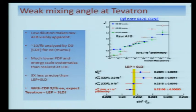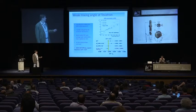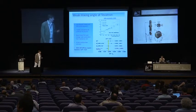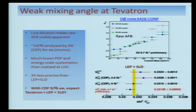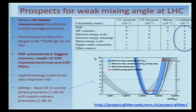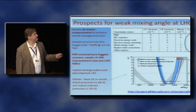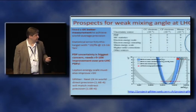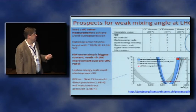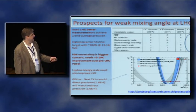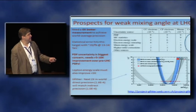Meanwhile, the Tevatron D0 has a new result on the forward-backward asymmetry based on 10 inverse femtobarns. They don't have the same PDF and dilution limitations as the LHC, and their measurement is only three times less precise than the world average. When CDF comes in with a comparable measurement, the Tevatron combination will then be on the same footing as LEP and SLD. At the LHC, the prospects are more pessimistic because the systematics are dominated by PDF uncertainty, which needs to improve by a factor of 5 to 10 to reach interesting precision — making it hard to get below 1×10⁻⁴ in the weak mixing angle anytime soon.